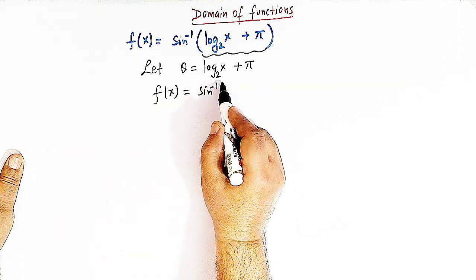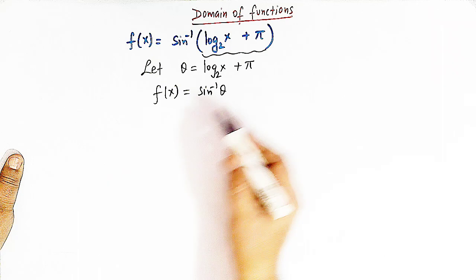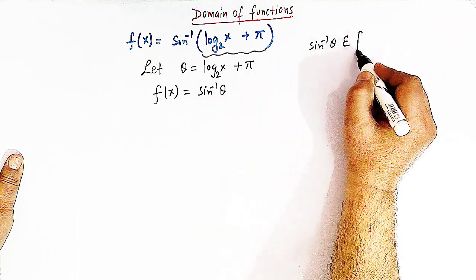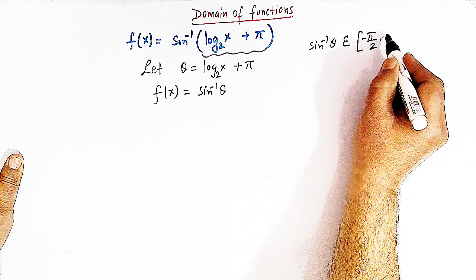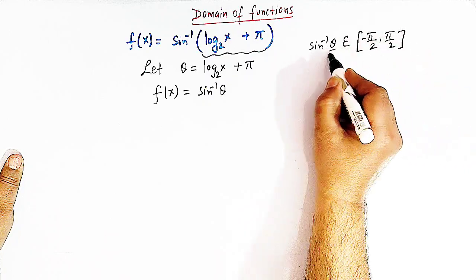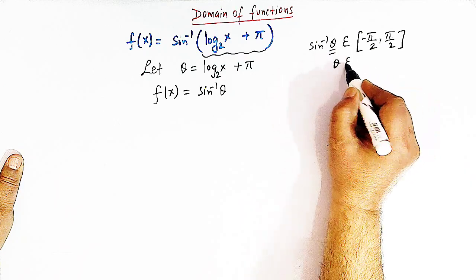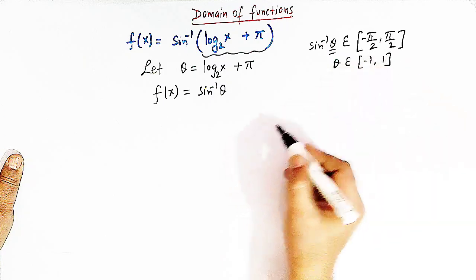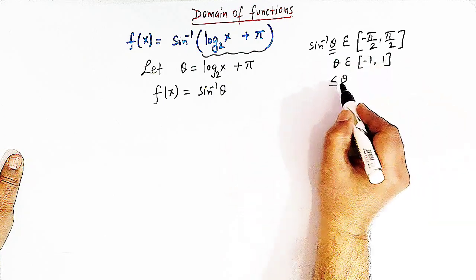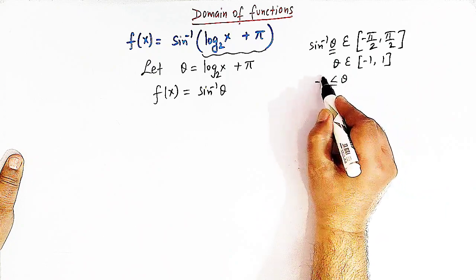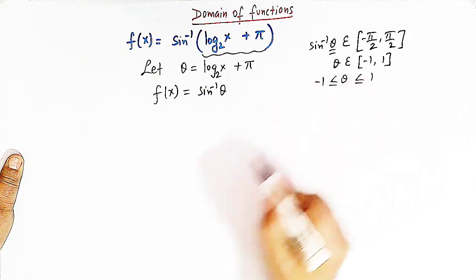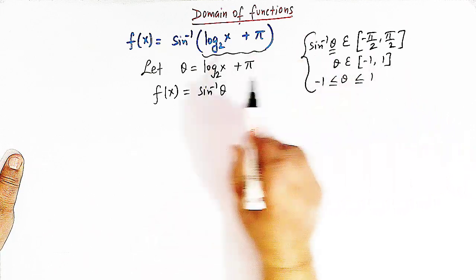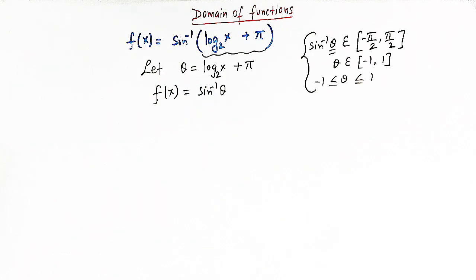From inverse trigonometric functions, we know that the range of sin inverse theta is from minus pi by 2 to pi by 2, where theta belongs to the interval from minus 1 to 1. We can also write this as theta greater than or equal to minus 1 and less than or equal to 1. This is the key concept used to find out the domain of this function.